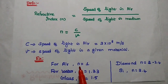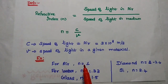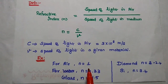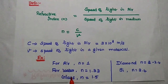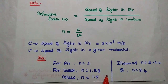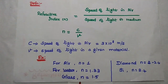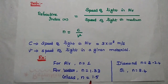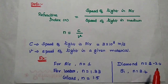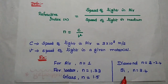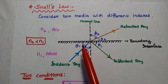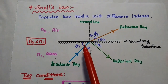Here are examples of refractive index for different materials. For air, its value is 1. For water, its value is 1.33. For glass fiber, its value is 1.5. For diamond, its value is 2.42. For silicon, its value is 3.4.